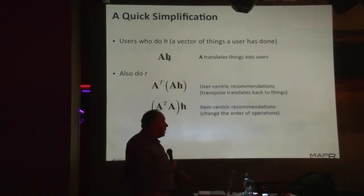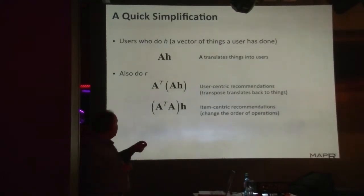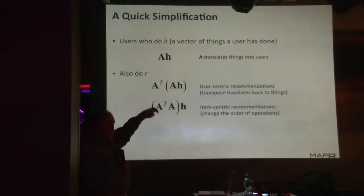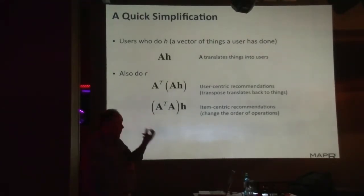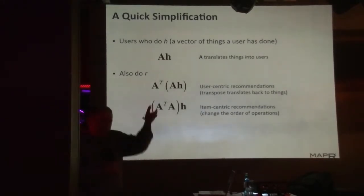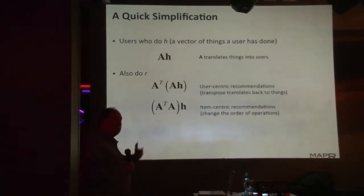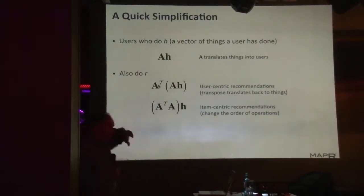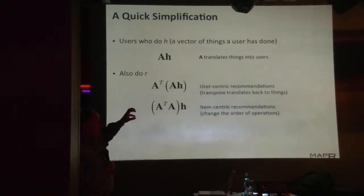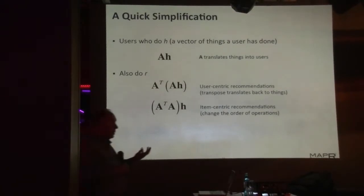H is a vector — a list of things that exist in somebody's history. A is the matrix with rows for users and columns for things. When I have a user-by-thing matrix that I multiply by a thing-by-one vector H, I get a user-by-one vector. So A·H translates the thing history into a vector of users — it's doing the operation of 'users who did H1, H2, H3, and so on.' Then I can multiply by A-transpose on the left — that's a thing-by-user matrix — which translates it back to things. So A-transpose·A·H means: 'users who did H also did such and such.' That's recommendation — hard collaborative filtering.